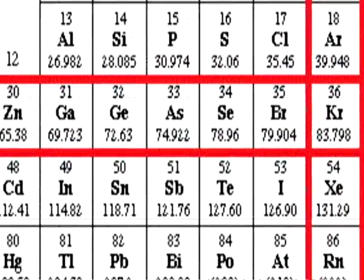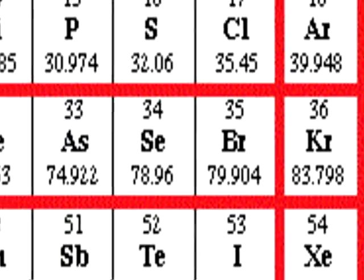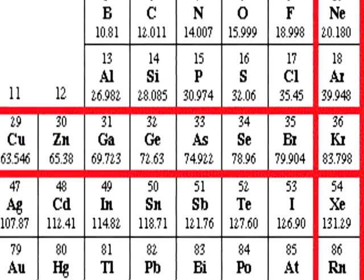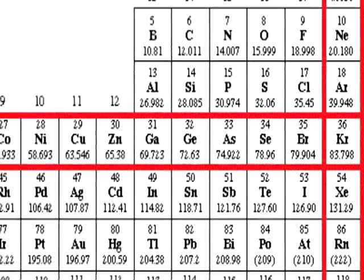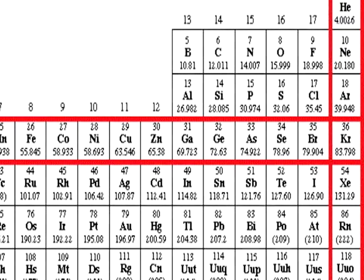On the right side, group 18, period 4, there's Krypton. It's in the noble gas section, so what can the natural state be of this noble gas? Hmm... It's definitely a liquid.